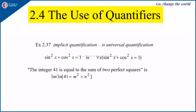Next, implicit quantification: if no quantifier is specified, it is by default a universal quantification. For example, sin²x + cos²x = 1 means 'for all x, sin²x + cos²x = 1.' When a sentence states 'the integer 41 is equal to the sum of two perfect squares,' this is given by an existence statement: there exist m and n such that 41 = m² + n², since this is only true for a few values of m and n.